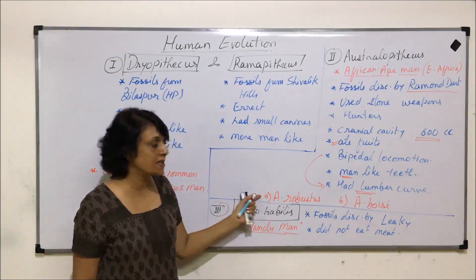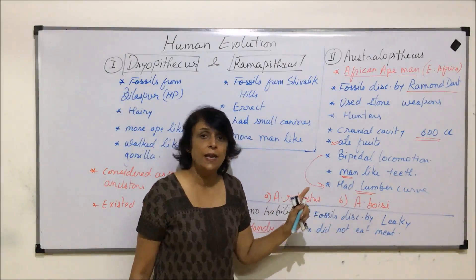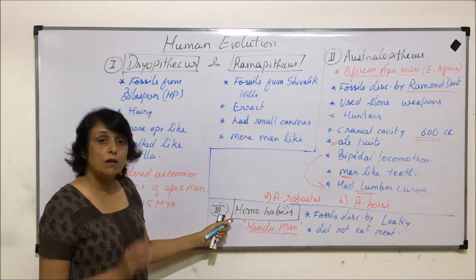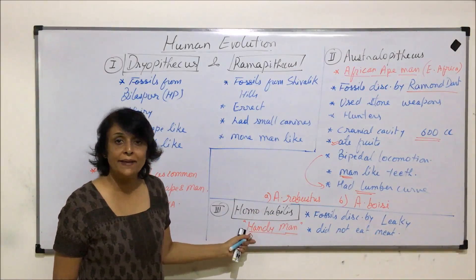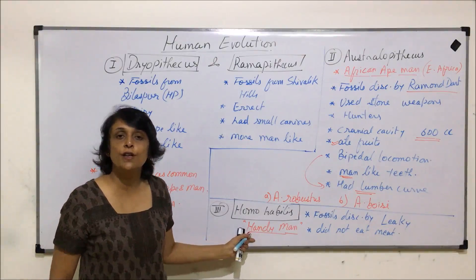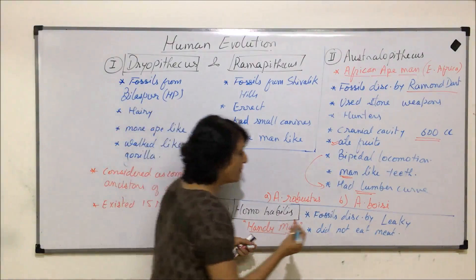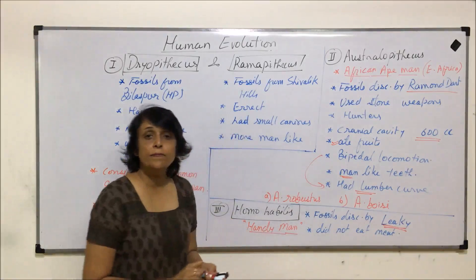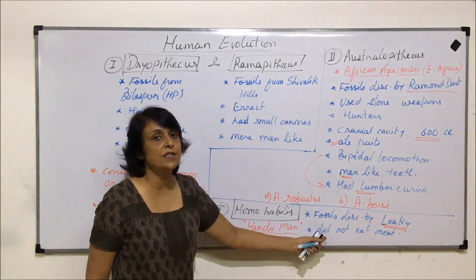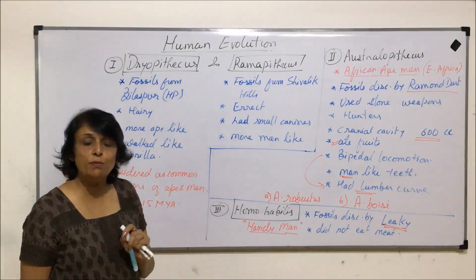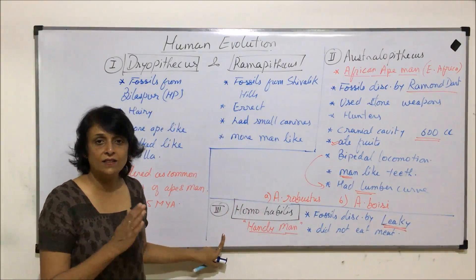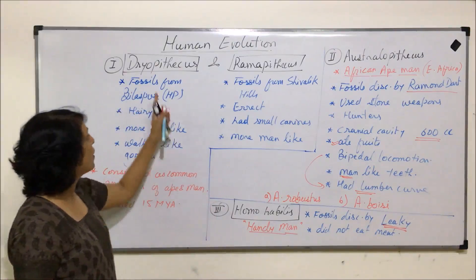Two more Australopithecus fossils were found: Australopithecus robustus and Australopithecus boisei. After Australopithecus, the next fossils found were termed Homo habilis, or 'handyman' — the third link in human evolutionary history. Their fossils were discovered by Leakey, and from the bones, structure, and teeth, it was understood that they were non-meat eaters, probably based on the type of canines they had.